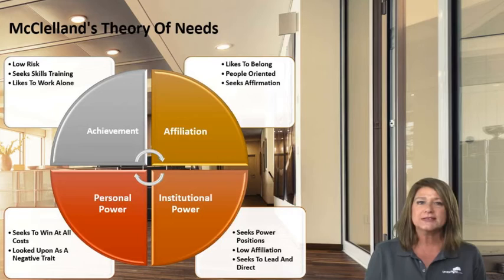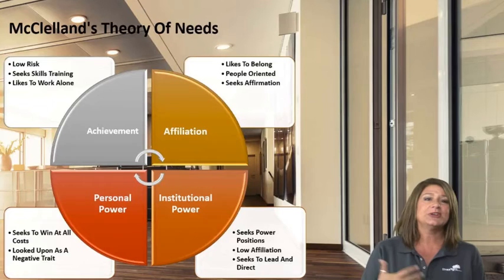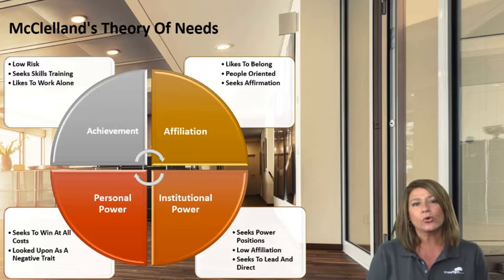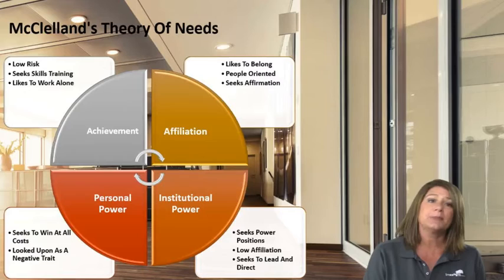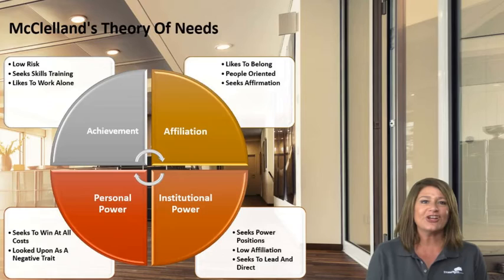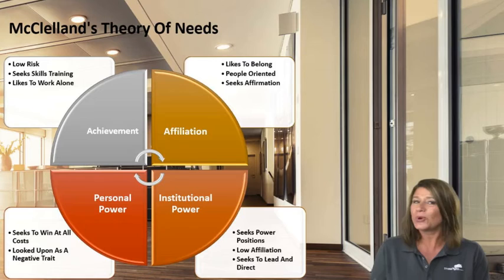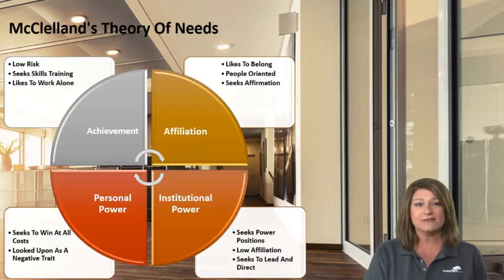Affiliation-oriented people just like people — they want to work on teams, be told they're liked, and need that affirmation that they're doing a good job. Power-oriented people fall into two distinct categories: institutional power, which is seeking higher positions and making decisions for the good of the organization while being lower on affiliation; and personal power, which McClelland viewed as a negative — people seeking to win at all costs. Figuring out what's driving your folks the most can truly help you motivate them at the level they need.